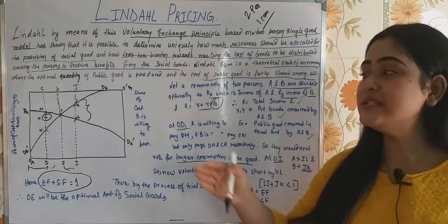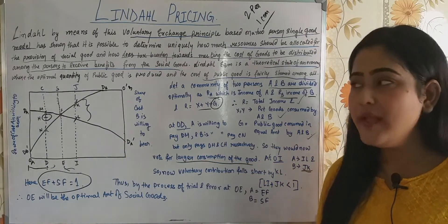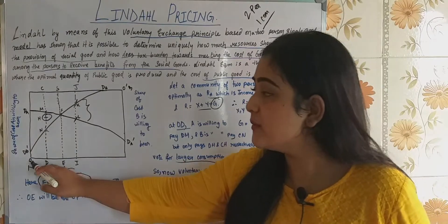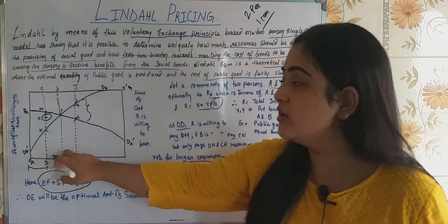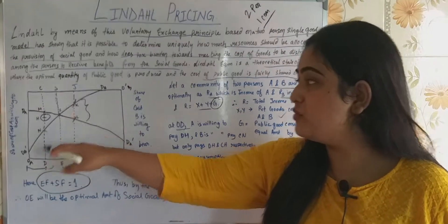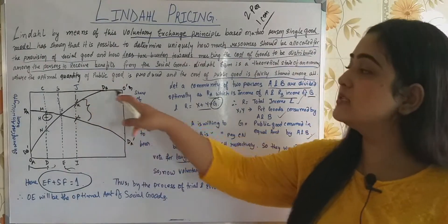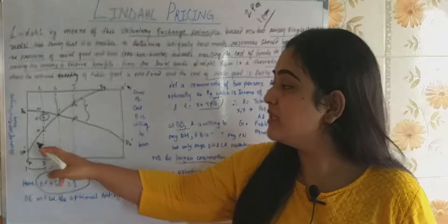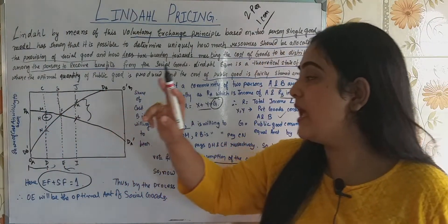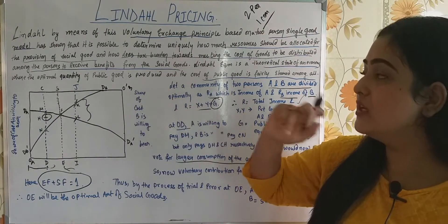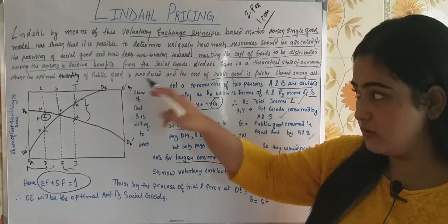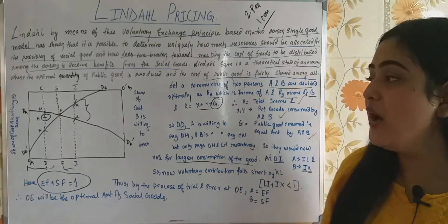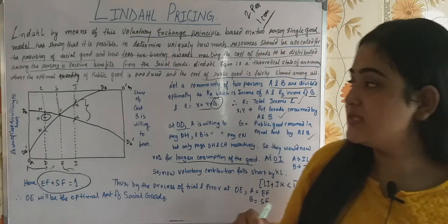Now let's move on to the diagram. The horizontal axis represents quantity. There is one axis for individual A and one axis for individual B. The demand for individual A is DA and DA dash, and the demand for individual B is DB and DB dash.